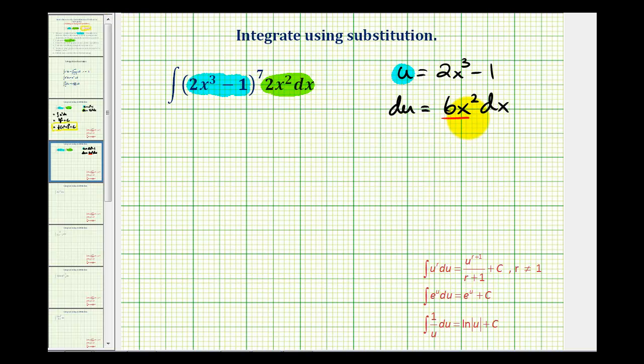So if we divide both sides by 3, we can rewrite this as 1 third du is equal to 2x squared dx. So notice how now this does match perfectly with what's left in our integral. 2x squared dx is equal to 1 third du.